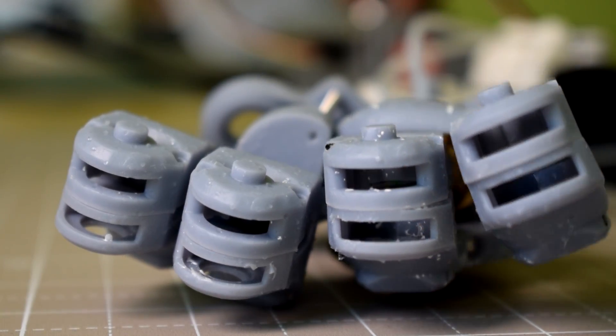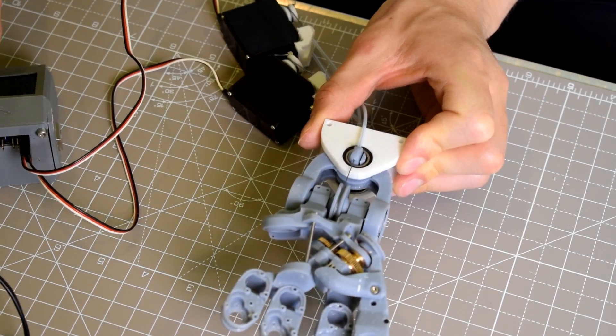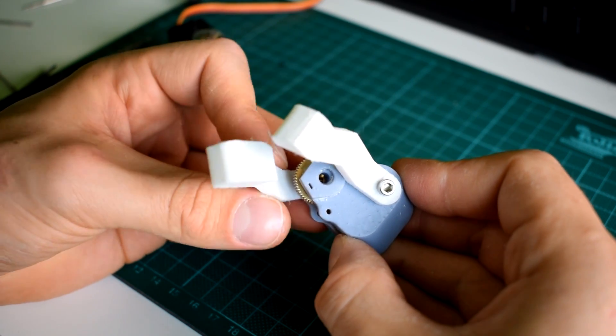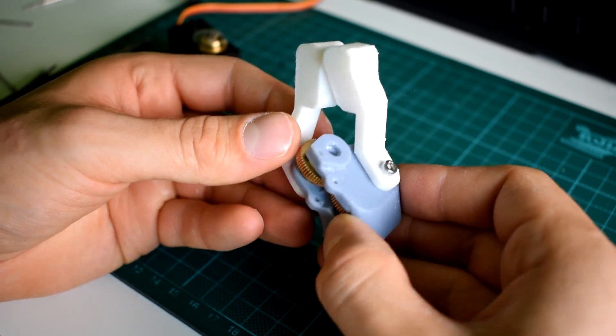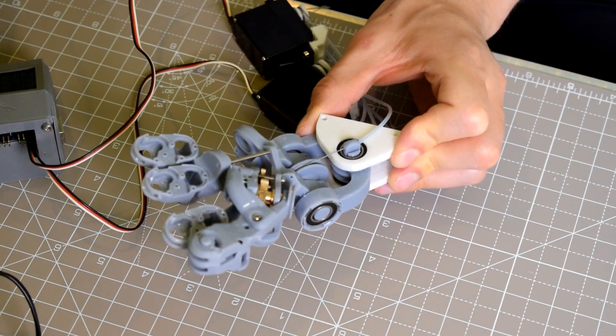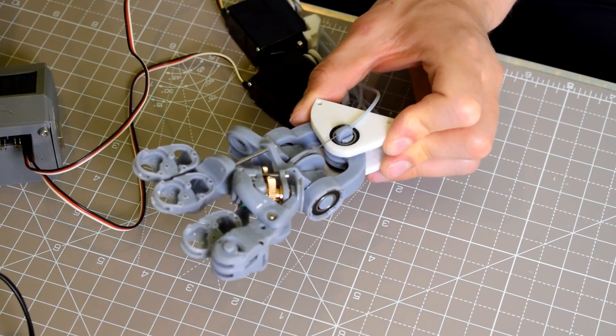Following on from the last video, I had my metacarpal motors, CMC joint mechanisms for the thumb, fourth and fifth metacarpal bones. The next thing I needed to do was design a wrist mechanism. In this video I'm going to talk about some of the design decisions I made for the wrist, and then I'm going to talk about how I integrated all of the mechanisms into a reasonably congruent palm.